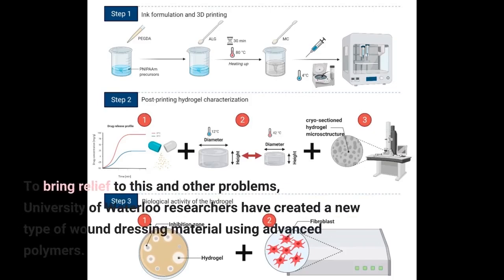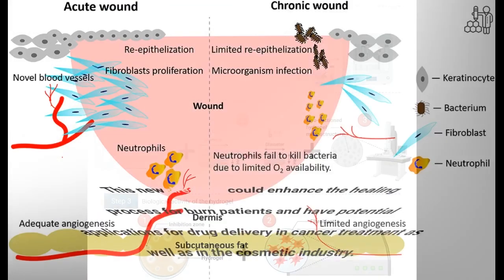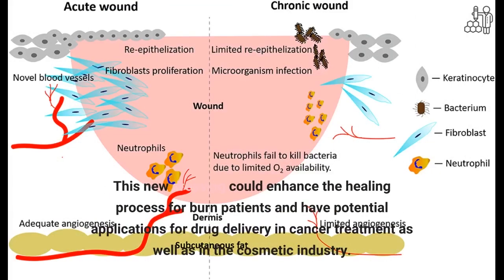To bring relief to this and other problems, University of Waterloo researchers have created a new type of wound dressing material using advanced polymers. This new dressing could enhance the healing process for burn patients and have potential applications for drug delivery and cancer treatment as well as in the cosmetic industry.